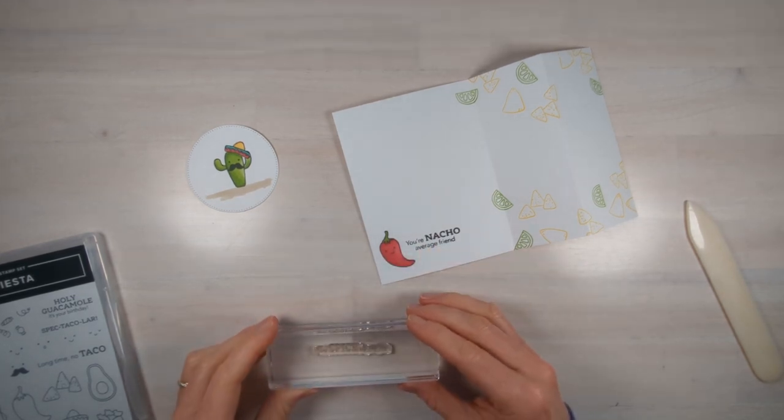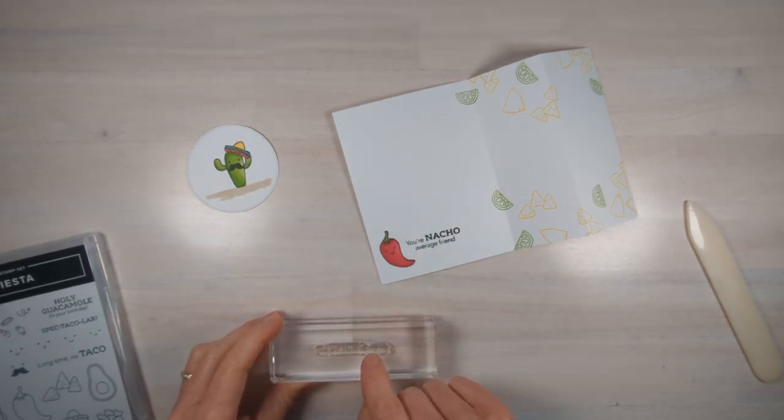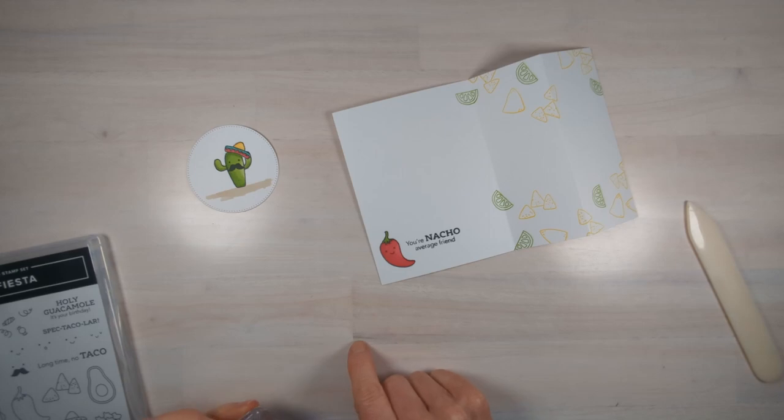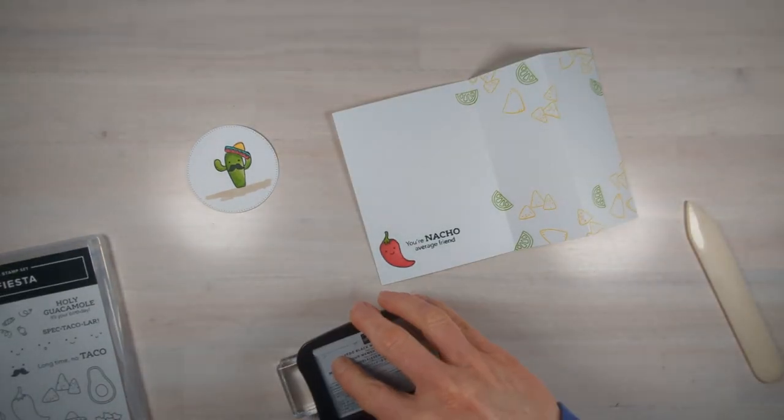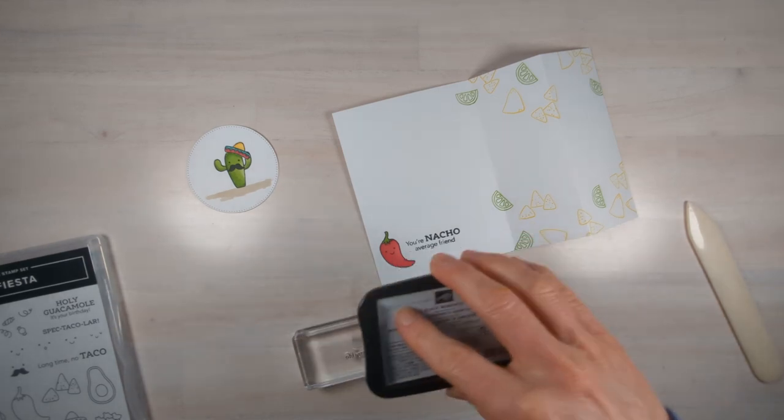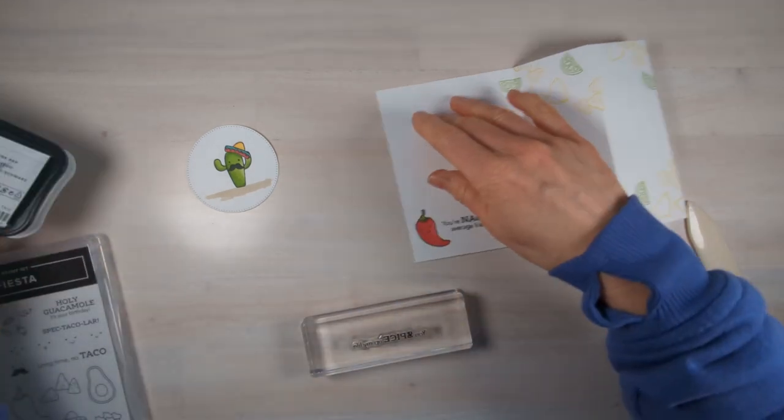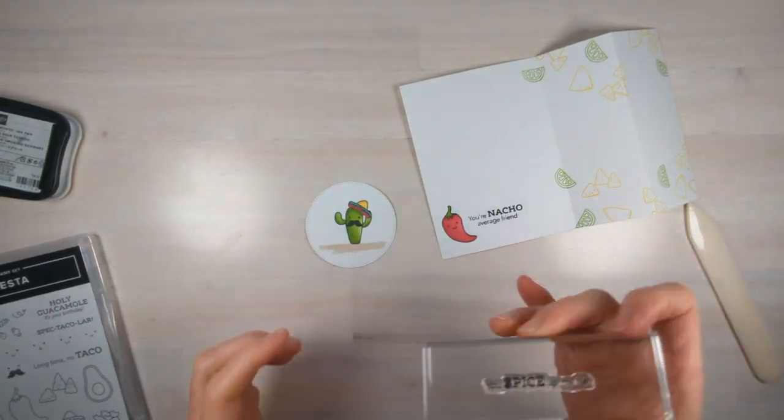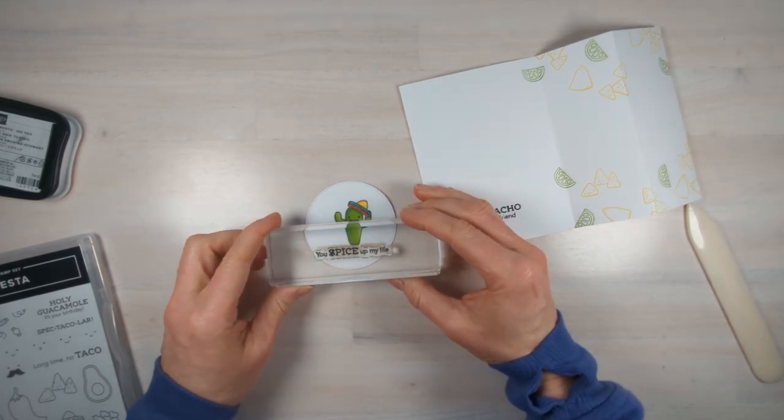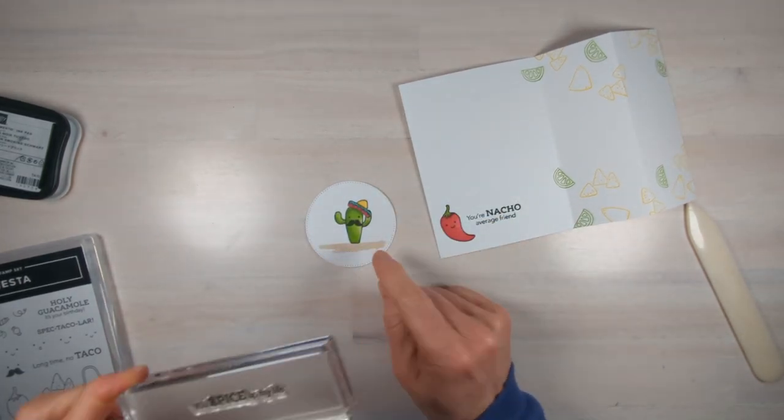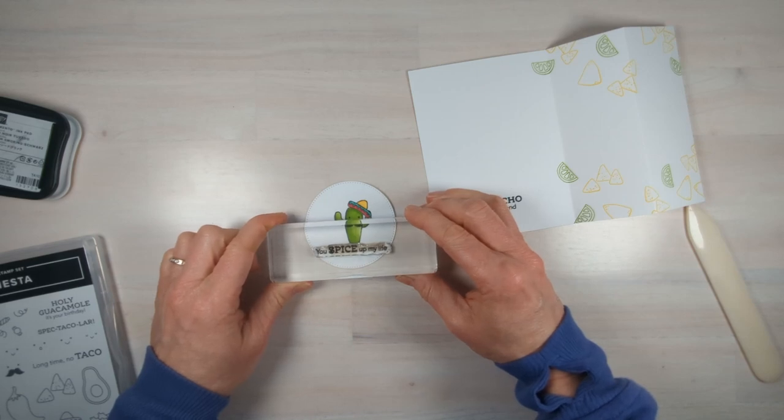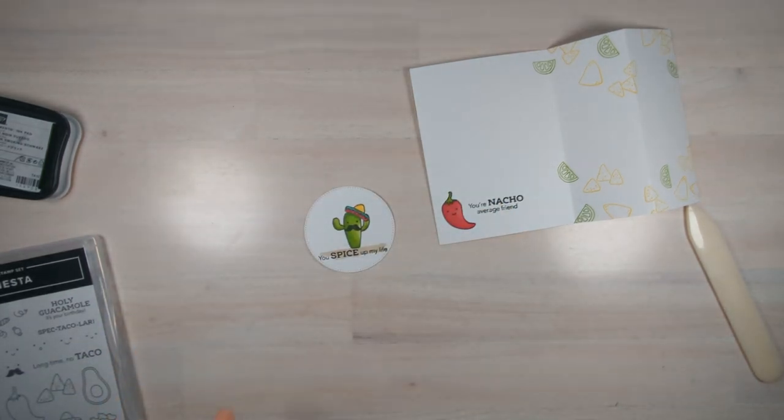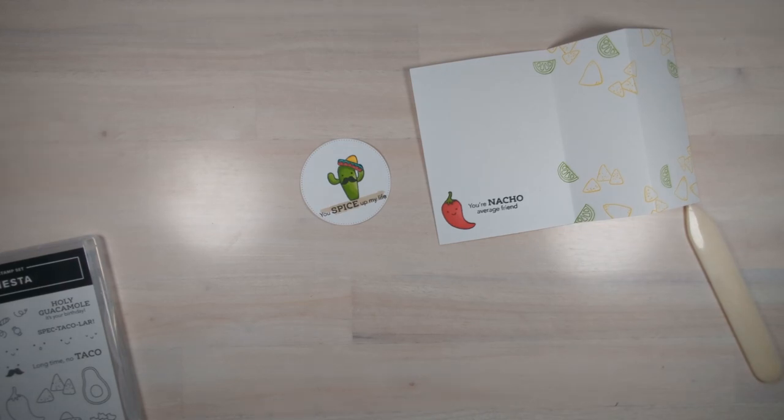Now we just have one more thing to do. We need to put a sentiment on the front. So you're going to line your sentiment up on your grid paper or I have a line right here on my table and then line your block up on top of that to get it nice and straight. I'm going to put it on top of my sand that I made right there. Yeah, it looks so great! All right, let's put this card together.